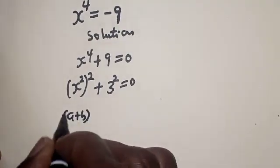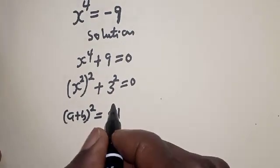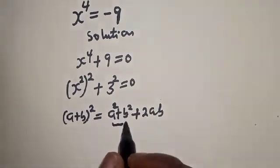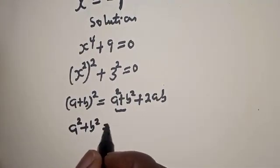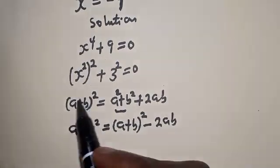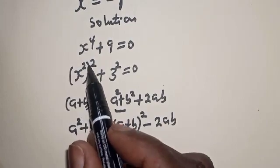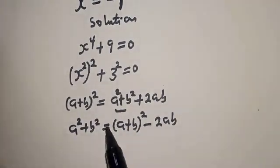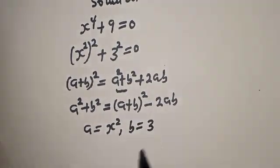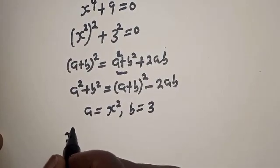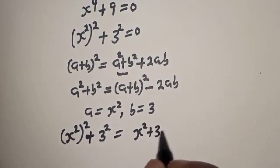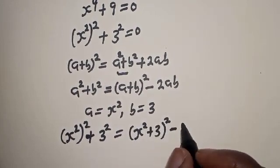Take note of the rule: if you have a plus b squared, it equals a squared plus b squared plus 2ab. Now let's look for a squared plus b squared. Therefore a squared plus b squared will equal a plus b squared minus 2ab. Comparing, here a squared is x squared and b squared is 3 squared, so a equals x squared and b equals 3.